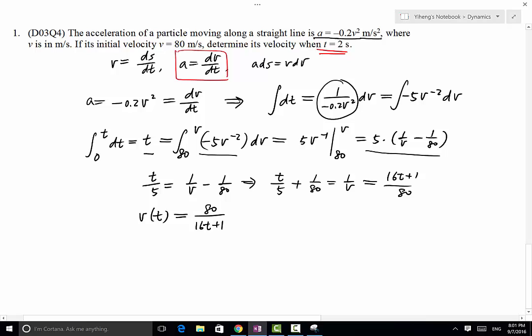Now you can evaluate the velocity at any time. But since t equals 2, this equals 80/(16×2 + 1), and that equals 2.42 in the unit of meters per second.